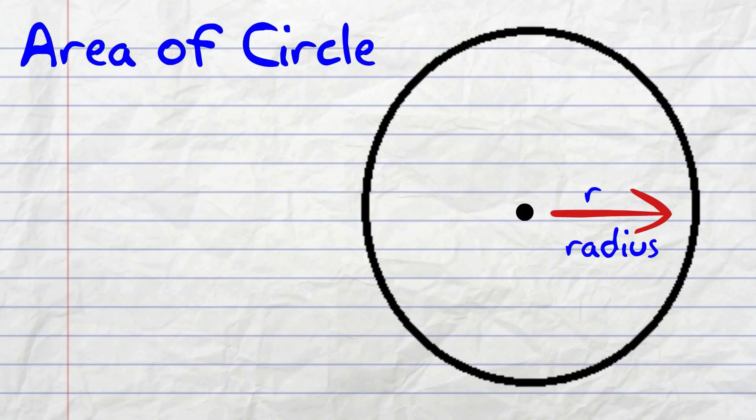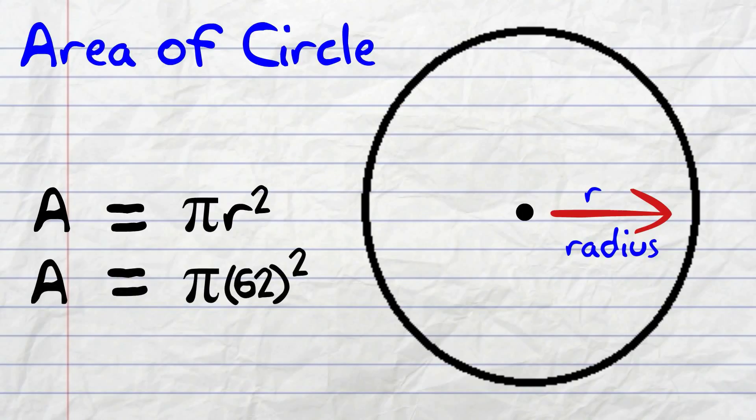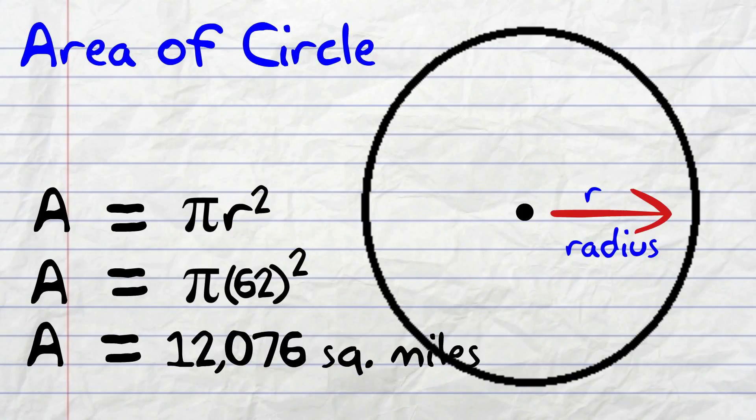Knowing the radius, we can now use the area formula for a circle. The area of a circle can be found by using the formula A equals pi times r squared. Let's replace r with 62 miles. Calculating this, we get A equals 3,844 pi, or when you plug it into your calculator, 12,076 square miles. That's what it is rounded to the nearest square mile.